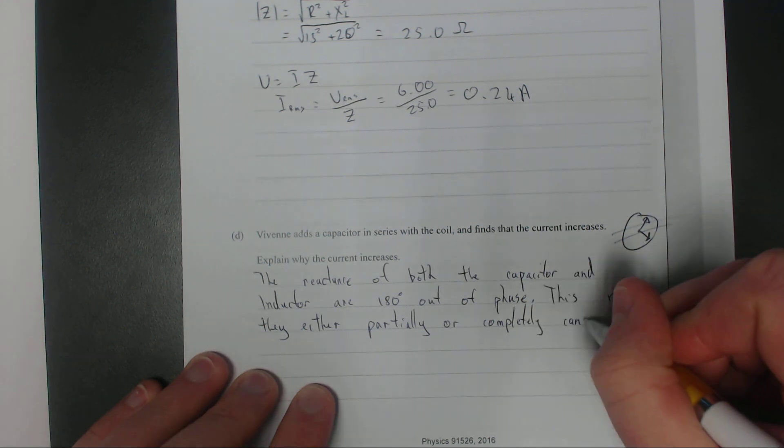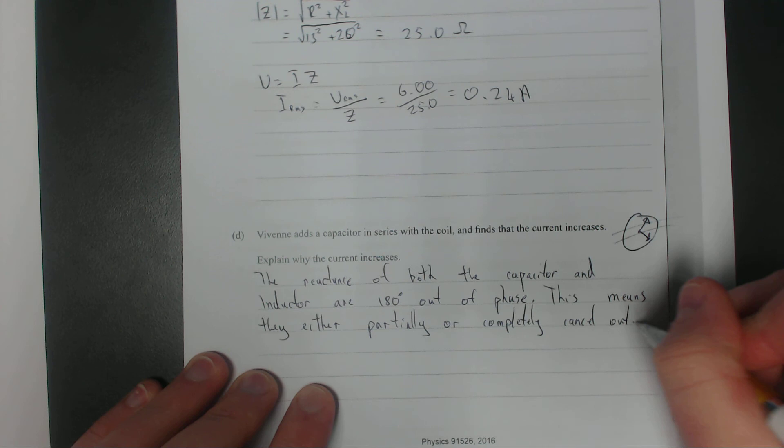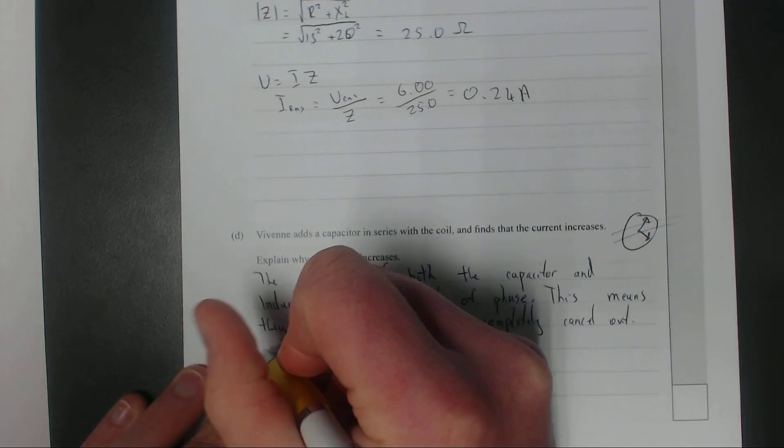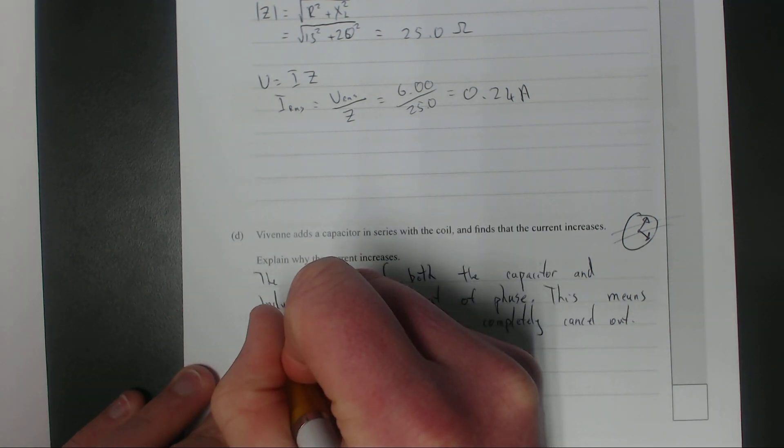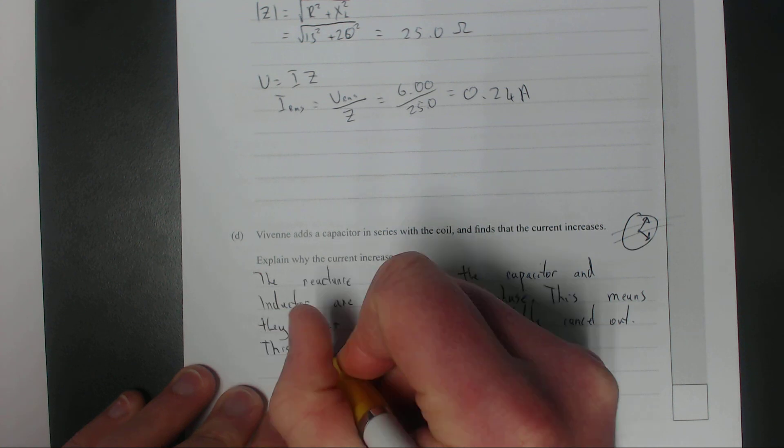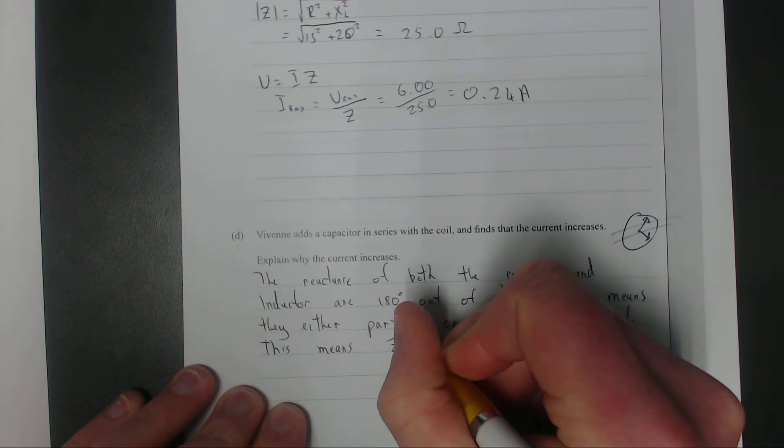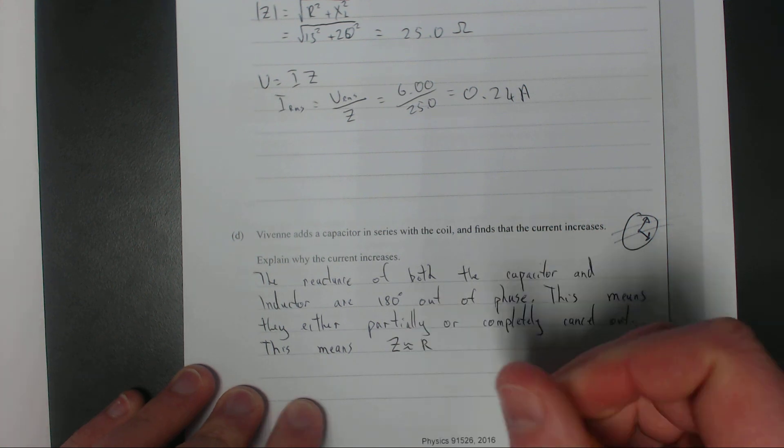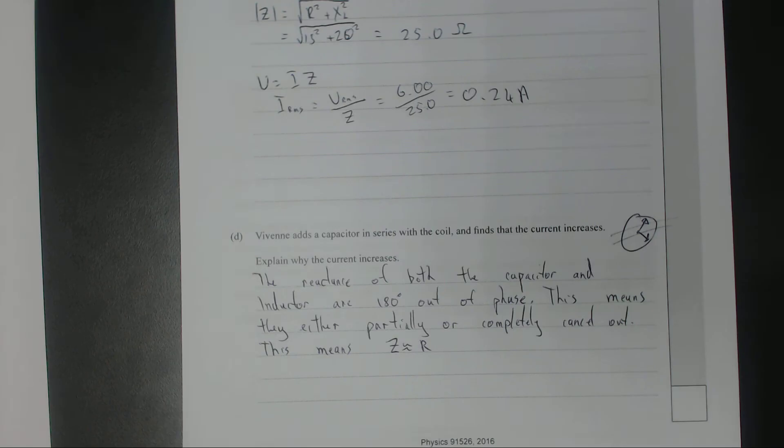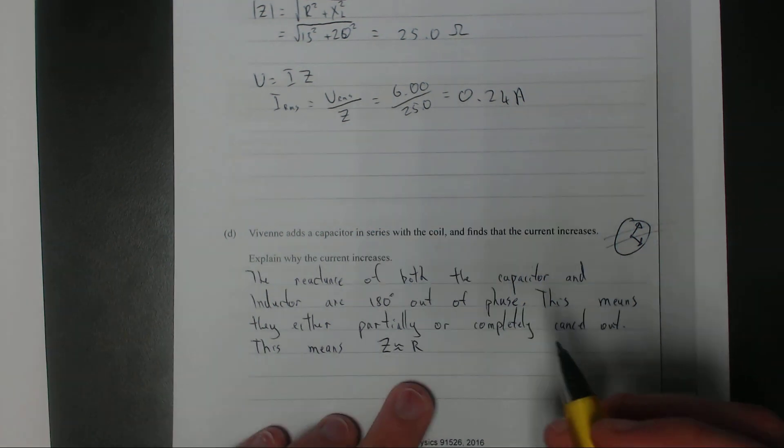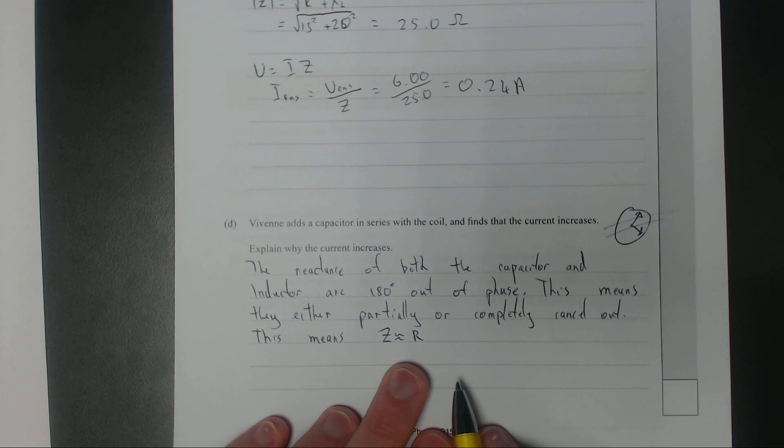This means Z is proportional to R if you've got no reactance at all. Basically, your impedance is equal to the resistance. We're assuming that's completely canceled out, so I've just put roughly equal to R.